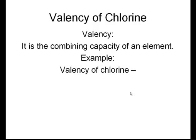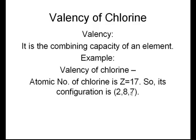The example we have taken here is chlorine. In order to find out the valency of any particular atom, we require two particular things: one is the atomic number and the second one is its electronic configuration.